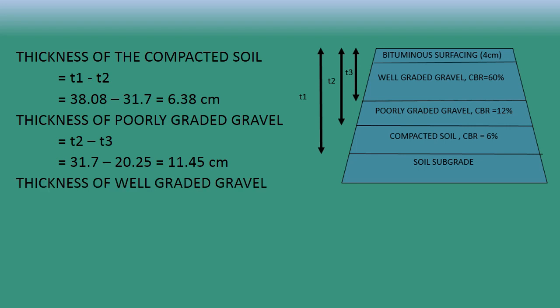The well graded gravel layer is just above the poorly graded gravel. Its thickness is given by T3 minus the bituminous surfacing thickness of 4 cm: 20.25 − 4 = 16.25 cm. Therefore, the thickness of the well graded gravel layer is 16.25 cm.